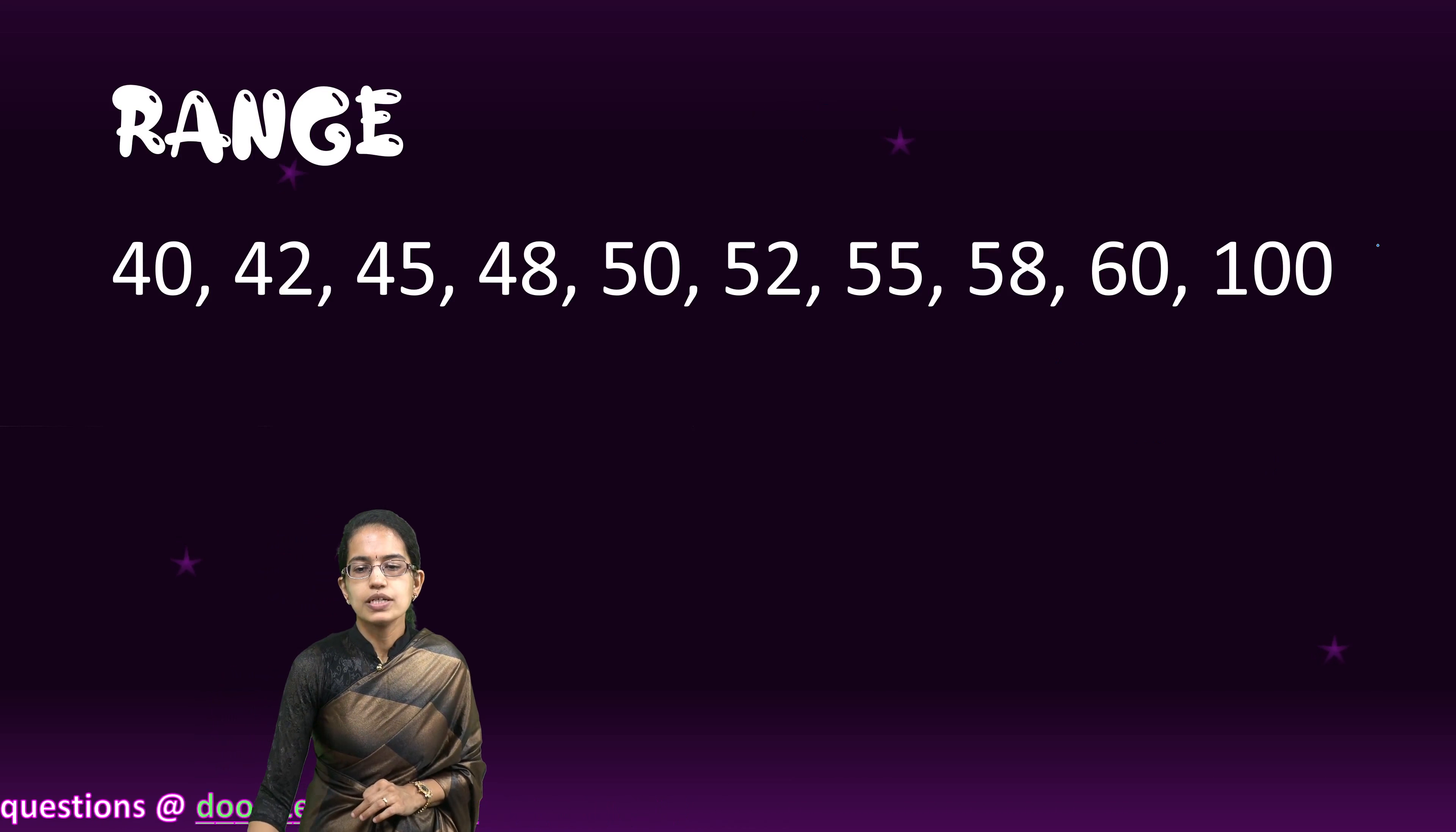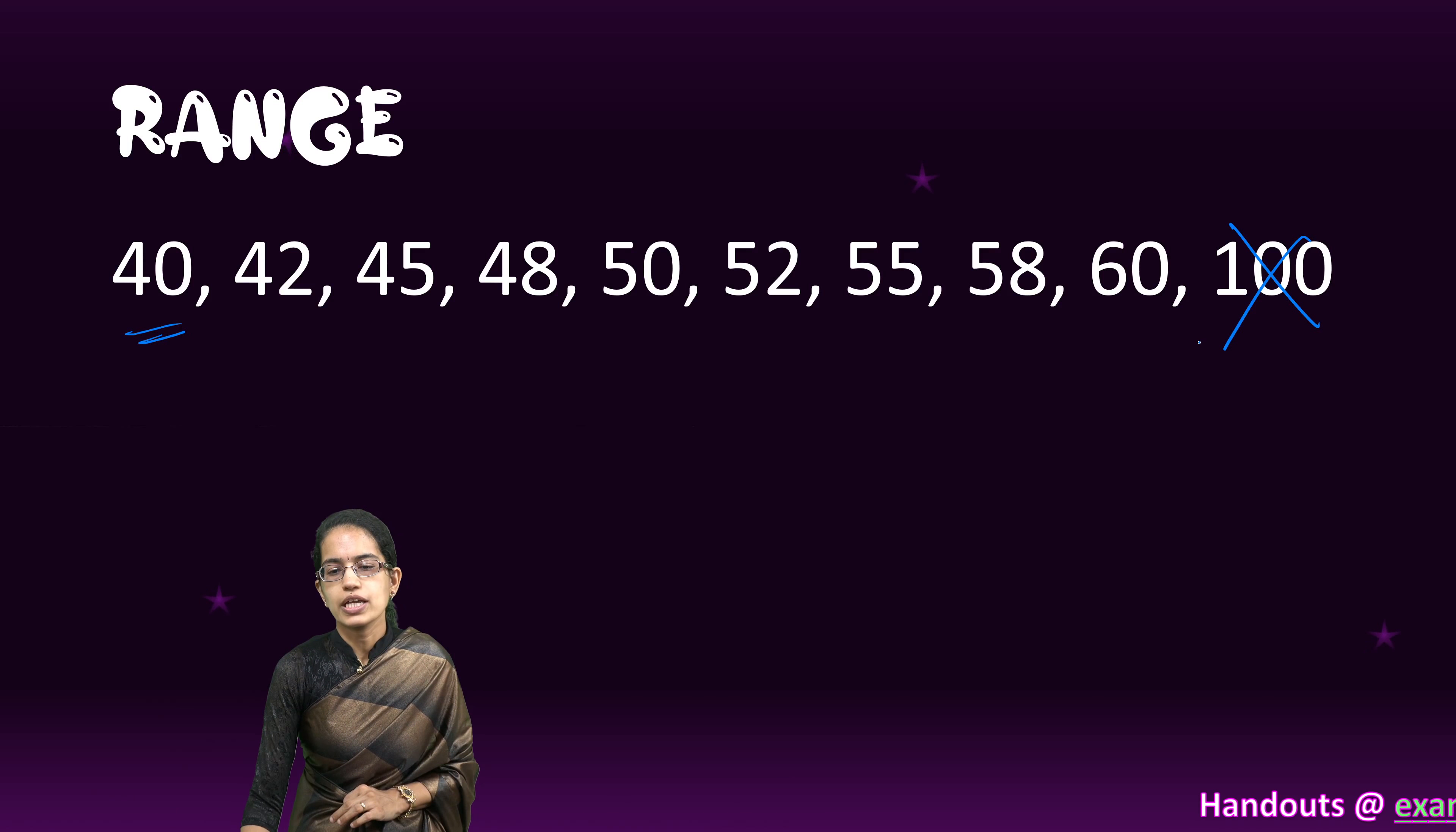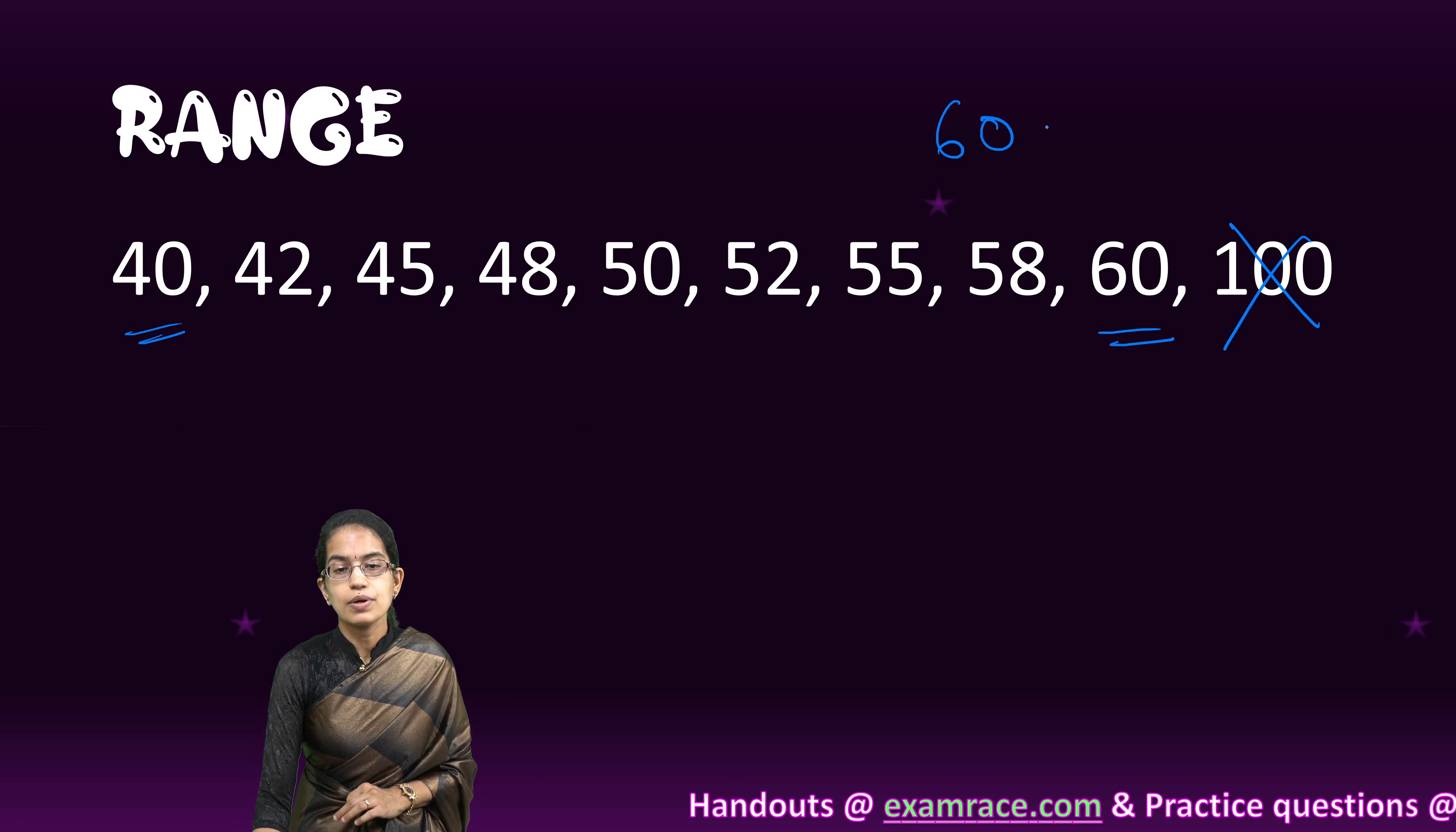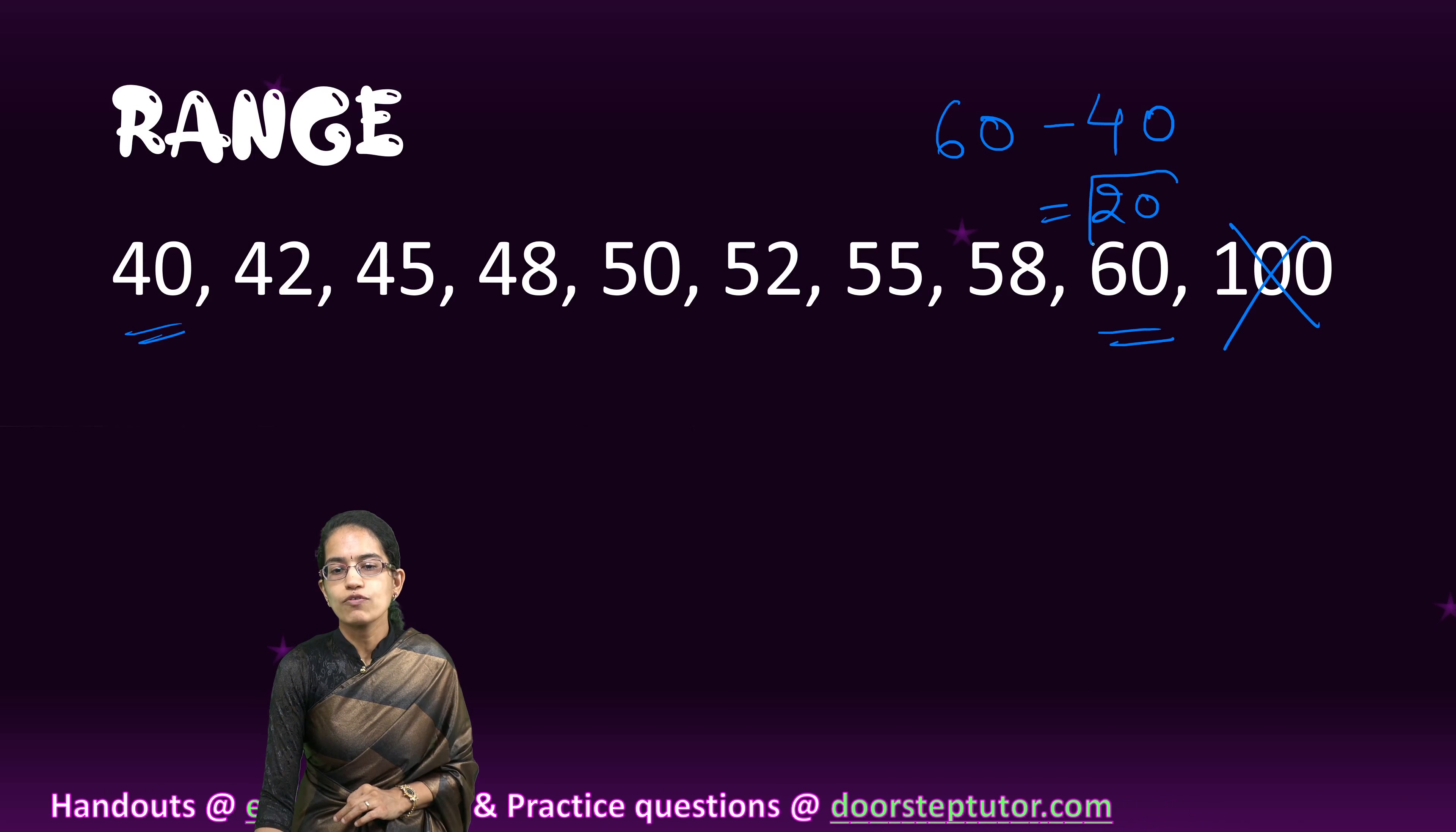Now what I do is I remove the biggest value, which is the 100, and I have the values from 40 to 60. So my range now changes. The maximum value is 60 and the minimum value is 40, which gives me a range of 20.